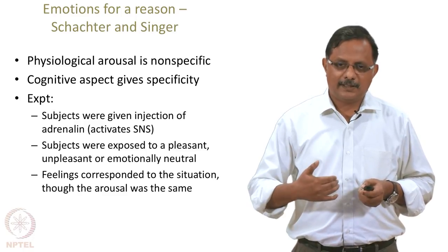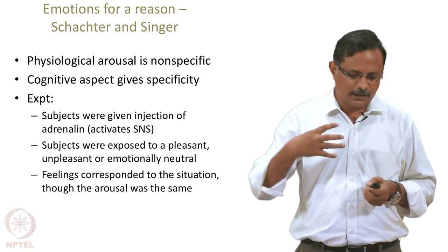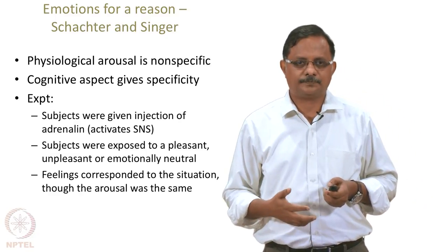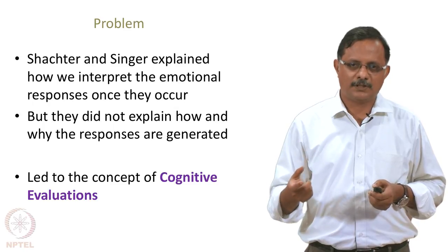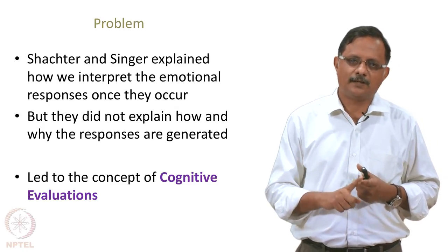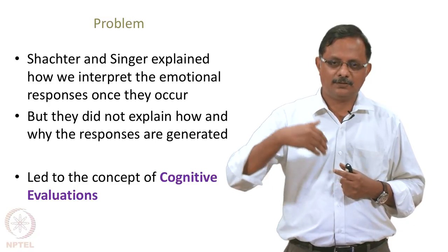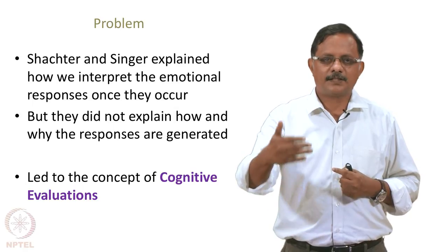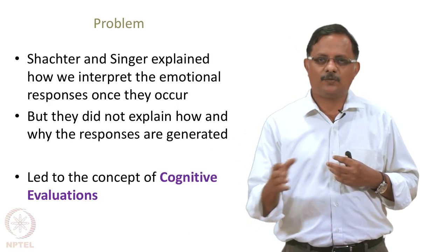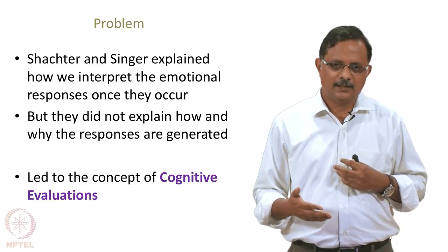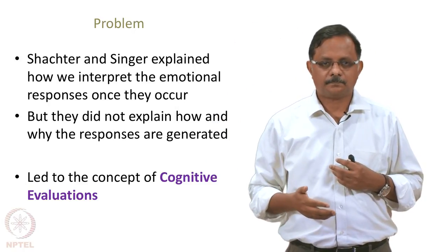Although the autonomic reaction was the same in all three cases, it is the high-level cognitive interpretation that gives specificity — not the body's physiology. But there is still a problem: what Schachter and Singer showed is how we interpret emotional responses once they occur. They did not explain why those responses occur in the first place. Why does a bear produce a response but a pen does not? None of these theories explain that — they only talk about the bodily response and what happens afterward.